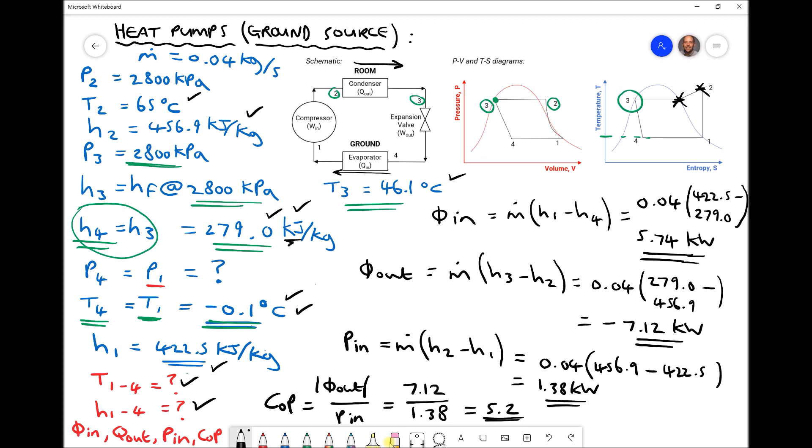Now the coefficient of performance number is so important because it helps us to determine whether the use of a ground source heat pump or an air source heat pump is viable in terms of the cost of running that device. Although here we're getting 5.2 kilowatts of heat for every kilowatt of electricity consumed, the cost of electricity is significantly higher than the cost of gas.